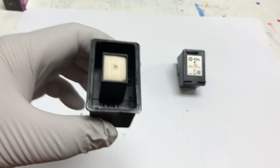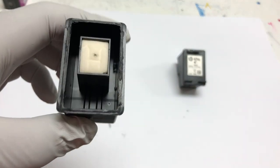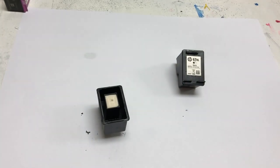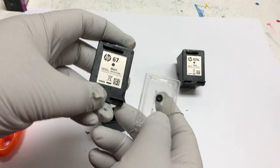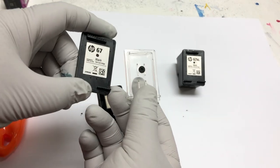You're going to see this tiny little sponge and guess how much ink it can hold. Also, you can see there's a wall around it and that's because HP doesn't want you to put more ink in it.